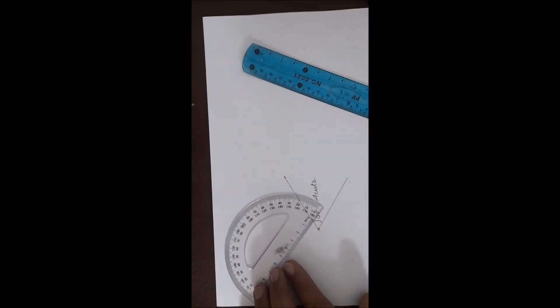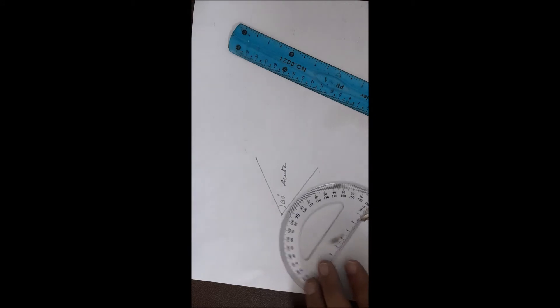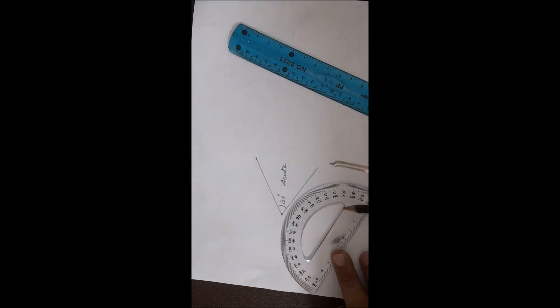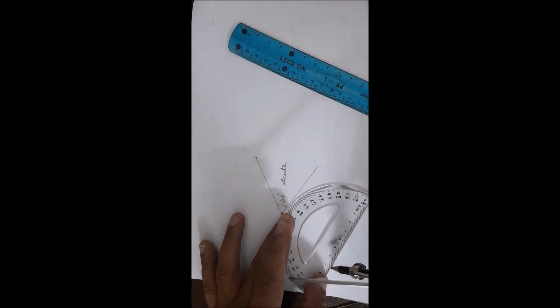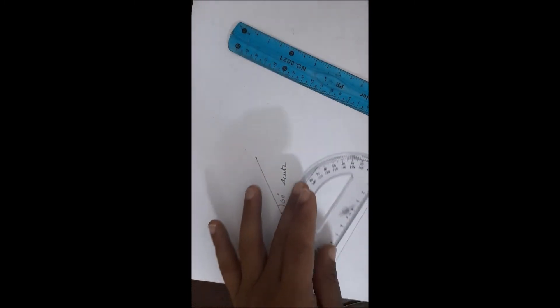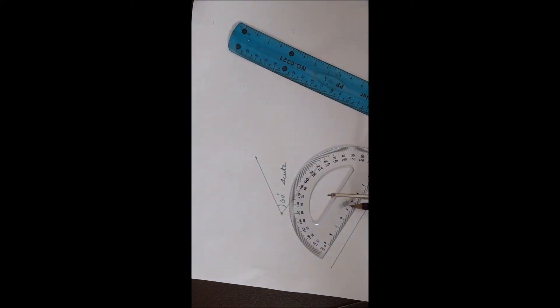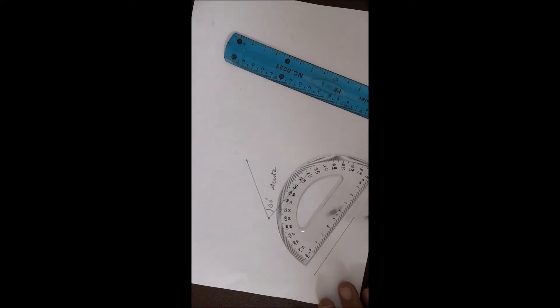Now I would like to make another acute angle, but from this side. Let me draw another line, 7 centimeters, and put this tab sign here on the edge of the line.